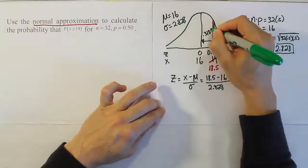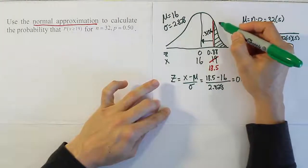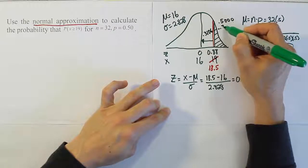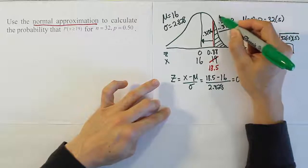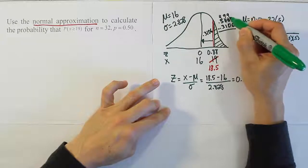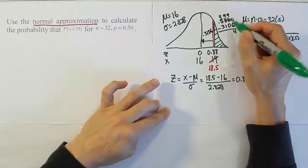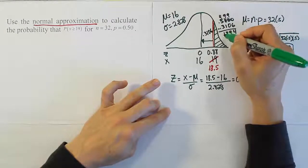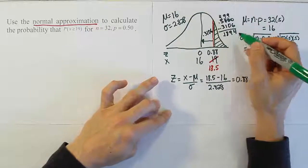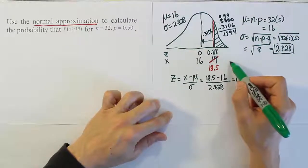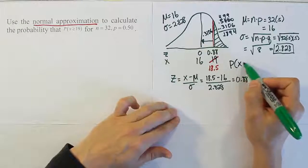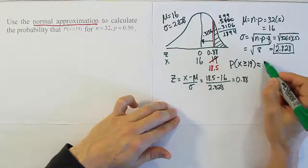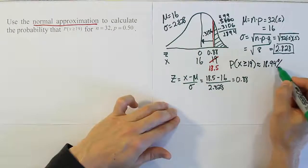The area in the tail is 0.5000 minus 0.3106. Doing the subtraction, we get the answer 18.94%. So the probability that x is greater than or equal to 19 is approximately equal to 18.94%.